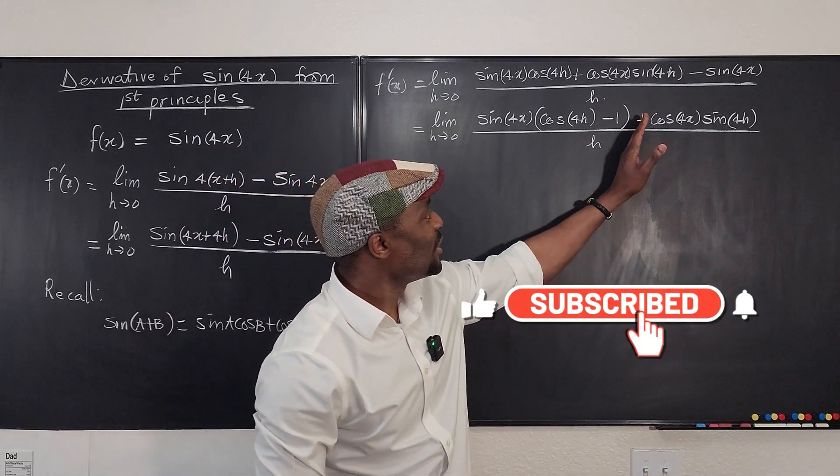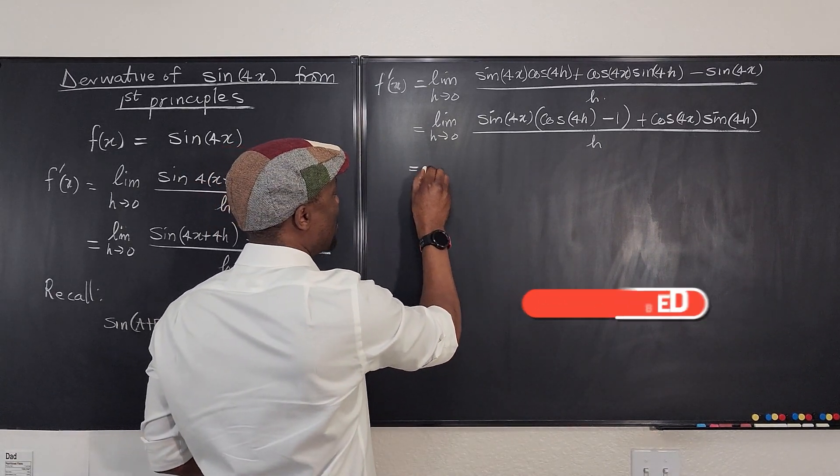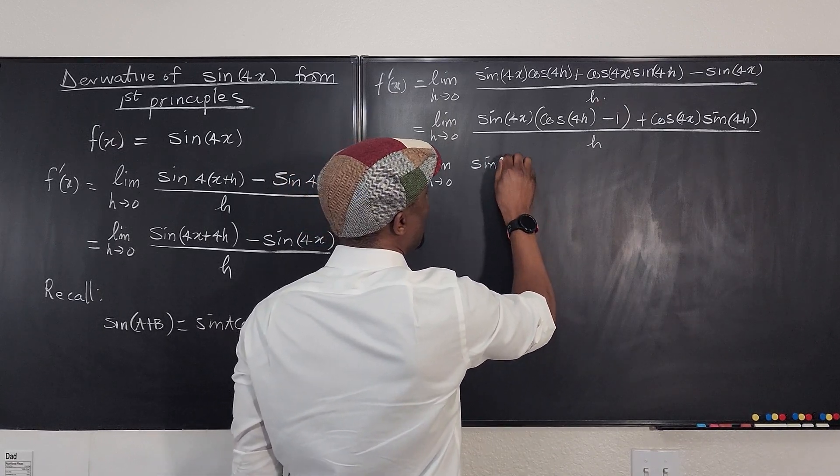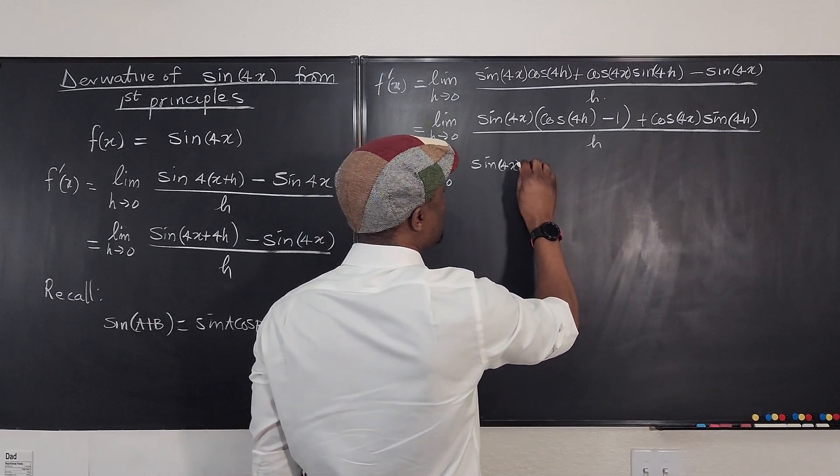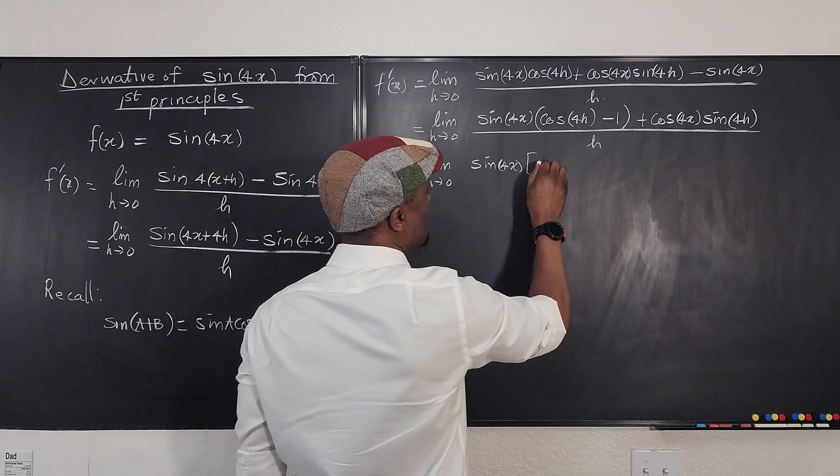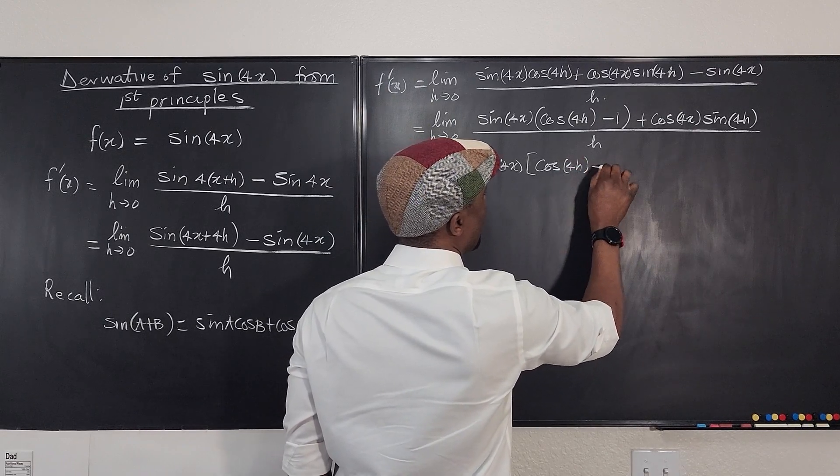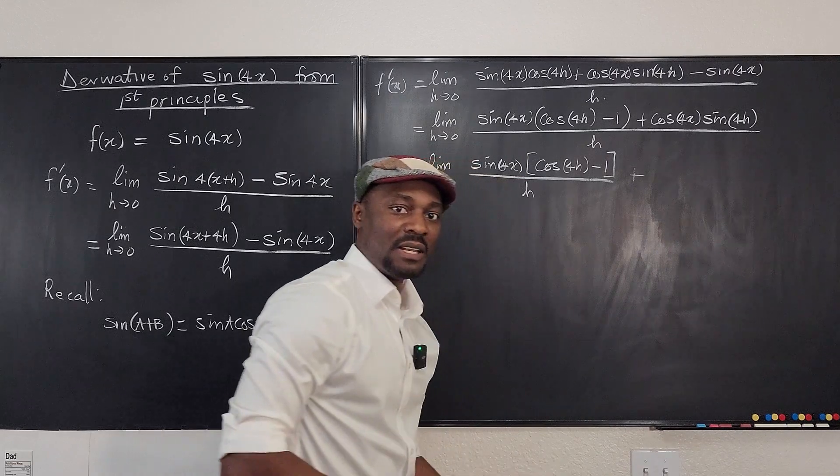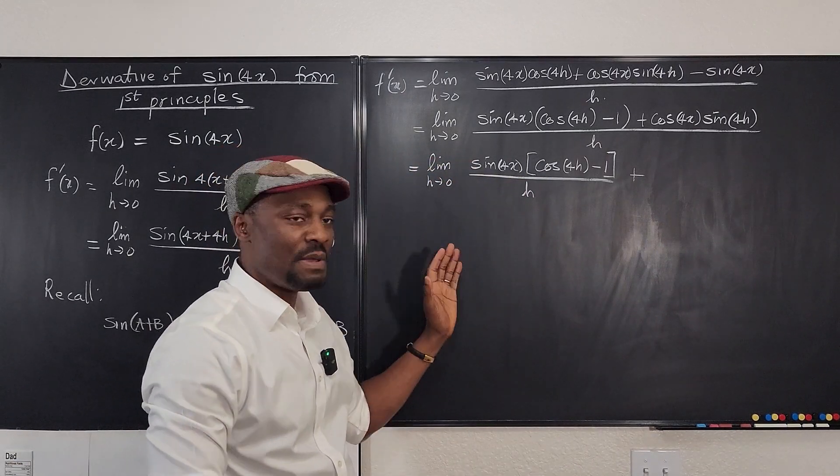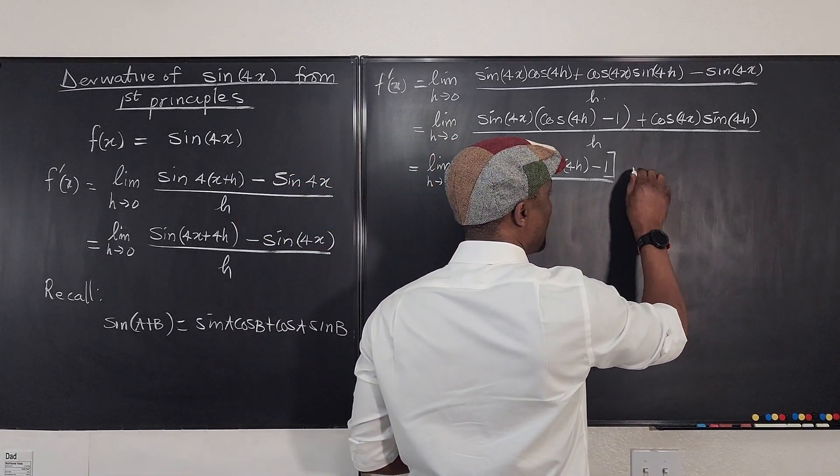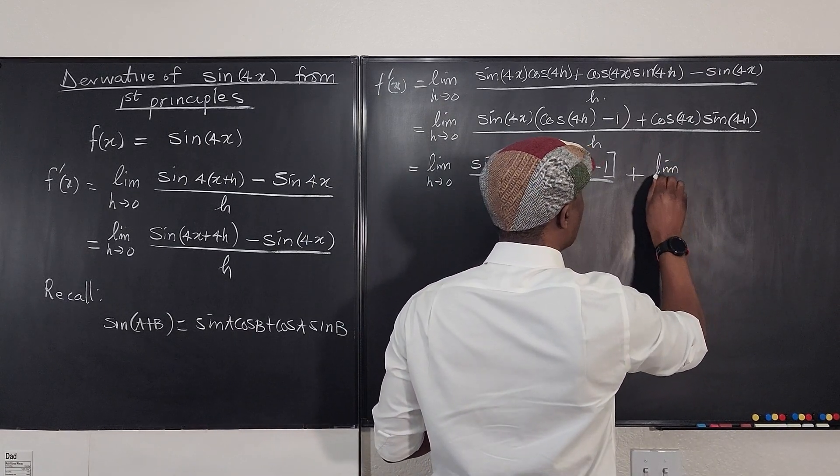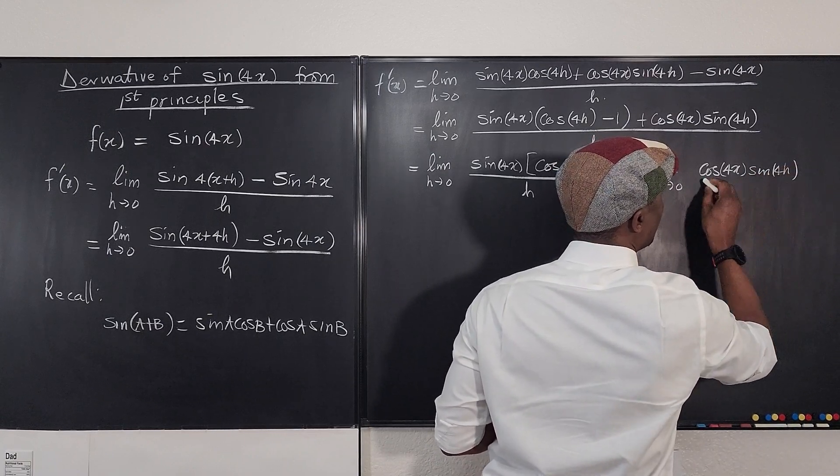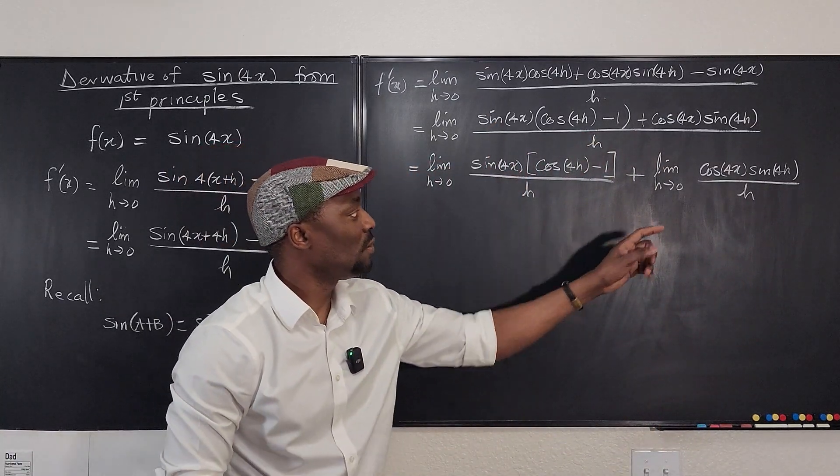So the first thing I'm going to do is I'm going to split this into two rational expressions. So I'm going to say this is equal to the limit as h goes to 0 of, I'm going to write sin(4x), times, let's do this kind of parenthesis, cos(4h) minus 1 over h. Plus, so apply the limit law that you can have the sum of limits. The limit of a sum is the sum of the limits as long as each limit exists. So what you have will be equal to the limit as h goes to 0 of just this one cos(4x)sin(4h) divided by h. Okay. So I've split the top into two separate limits.